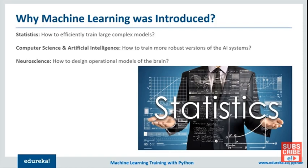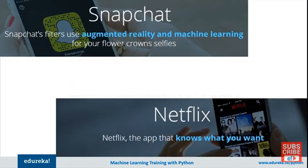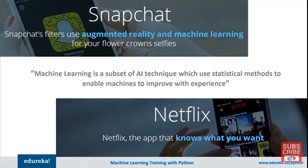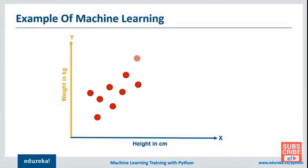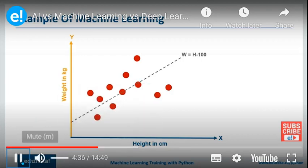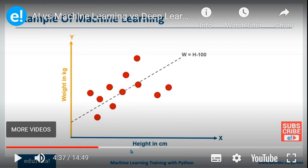Machine learning is a subset of AI which enables computers to make data-driven decisions to carry out certain tasks. These programs and algorithms are designed to learn and improve over time when exposed to new data. For example, to create a system predicting a person's weight based on height, you collect data, plot data points on a graph, and draw a line to predict weight based on height. Machine learning shifted focus from symbolic AI approaches toward methods borrowed from statistics and probability theory.